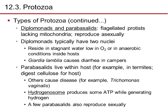Diplomonads and parabasalids are flagellated protists that lack mitochondria and reproduce asexually. Diplomonads typically have two nuclei and reside in stagnant water low in oxygen or in anaerobic conditions inside a host. Giardia lamblia, a diplomonad, causes diarrhea in campers. Parabasalids live within a host — for example, in termites, they digest cellulose for their hosts. Others can cause disease, such as Trichomonas vaginalis. Hydrogenosomes produce ATP while generating hydrogen in these organisms.